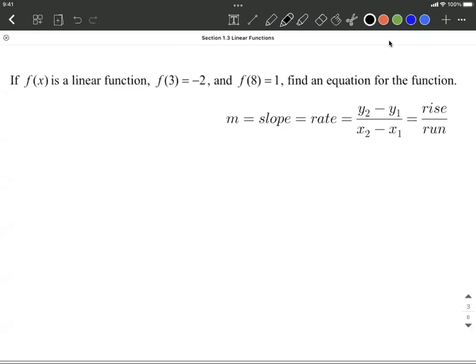We're told that f(x) is a linear function, meaning a line, and we're also given a little information about this. We know that f(3) is negative 2 and f(8) is 1. We're just asked to find the equation for this function.